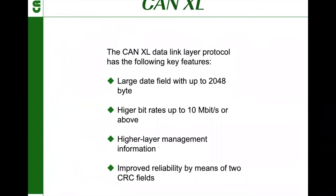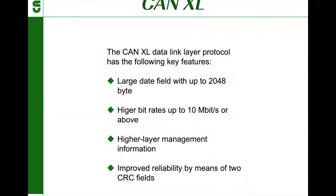The CAN-XL specification is not yet finalized, but part one — the protocol — is almost technically stable. The data link layer has the following key features: a large data field with up to 2048 bytes, support for higher bitrates up to 10 megabits or above, higher layer management information, and improved reliability by means of two CRC fields. This gives the system designer flexibility to adapt the network to application requirements.